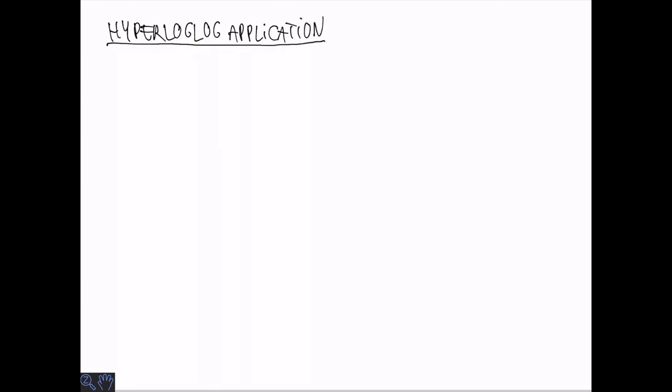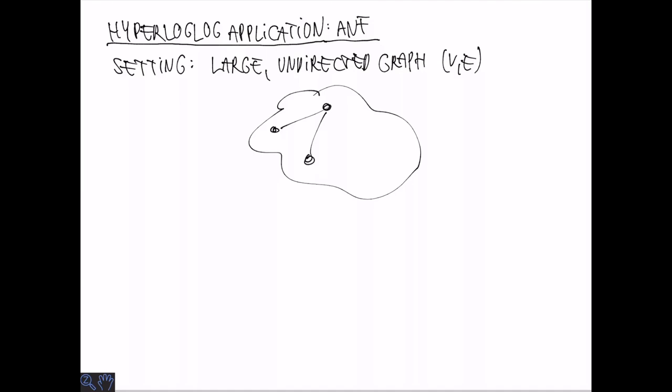HyperLogLog has lots of applications and is used extensively for analyzing large datasets. One of the cutest applications I know is ANF for approximate neighborhood function. The setting is that we have a large undirected graph, vertex set v and edge set e. We consider the case where the number of vertices and edges is really large, maybe 1 billion vertices and 100 billion edges. This is still a pretty sparse graph in the sense that the number of edges is much much smaller than the number of vertices squared.